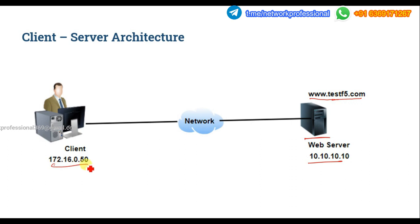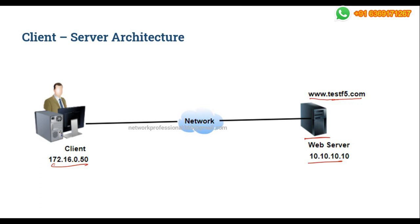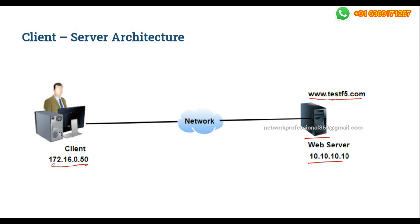If the client with IP address 172.16.0.50 wants to access testfi.com, through the network he can access the server and the application running within the server. Maybe just consider it is an intranet, so I used the private IP segments. If it's the internet, the client may have some public IP address, and the server will also have some other public IP address.